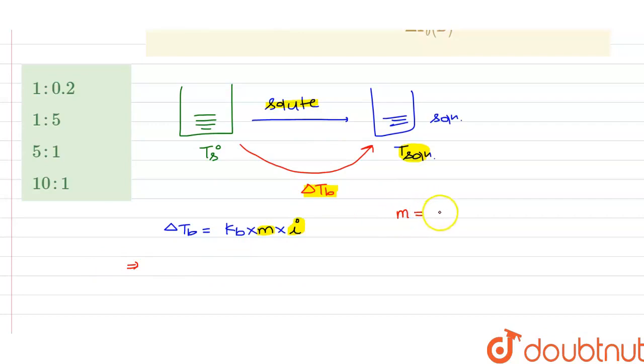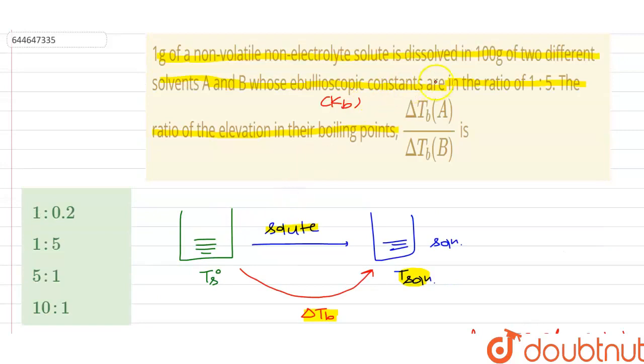know what is the molality. Molality is the number of moles of solute dissolved per kg of solvent. In the question, it has been said that it is dissolved in 100 grams of the solvent, so in both